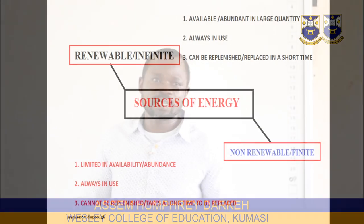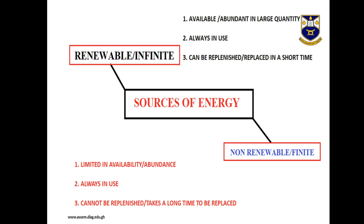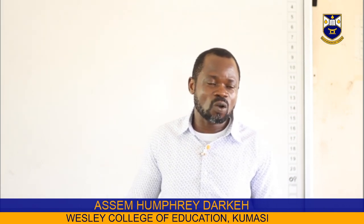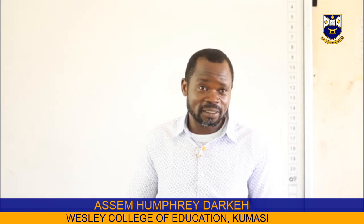On our slides, we can all see how the classification has been done. For renewable or infinite sources, the source of energy is available or abundant in large quantity, it is always in use, but it can be replenished within a short time. For non-renewable or finite sources, they are limited in abundance. For instance, the oil we have in Ghana will get finished one day, and the oil we have did not come in a day — it took a long time. In the last lecture, I hinted that we have oil because of some of the activities that went on during the slave trade.